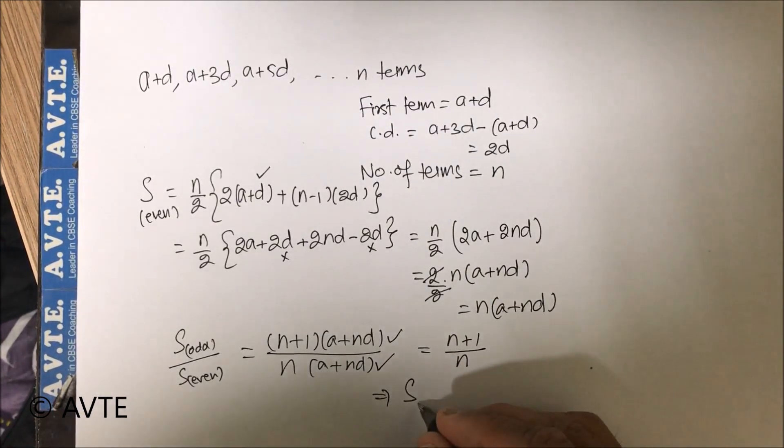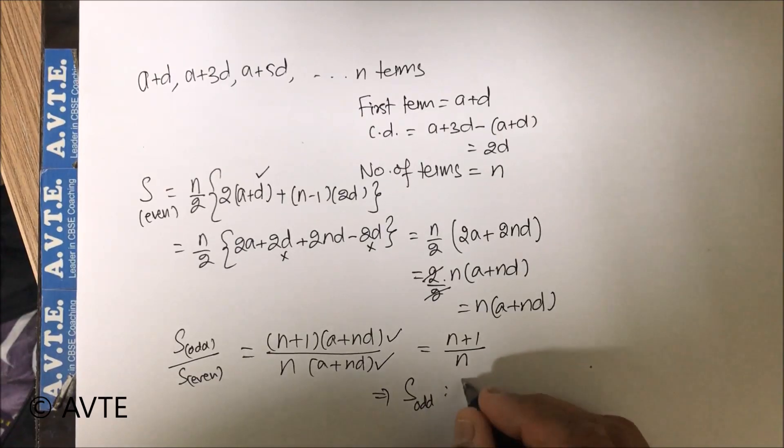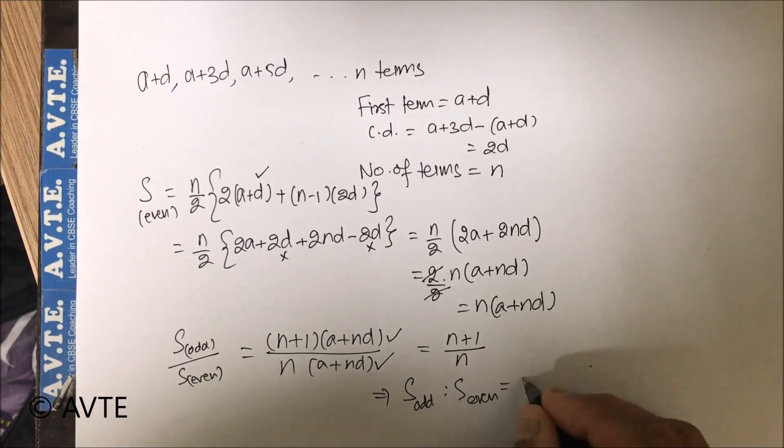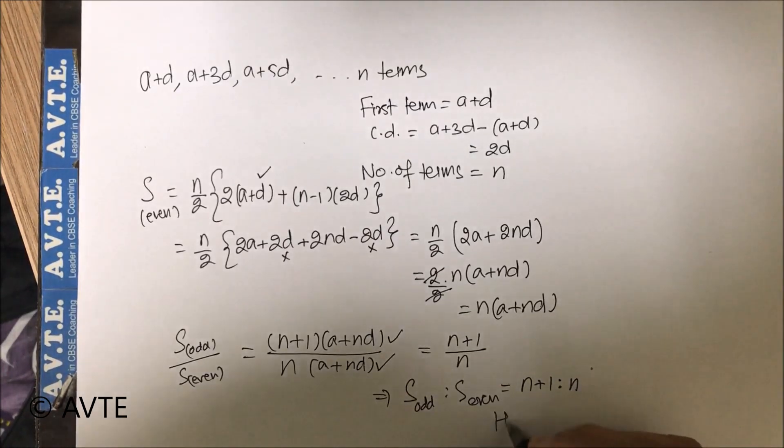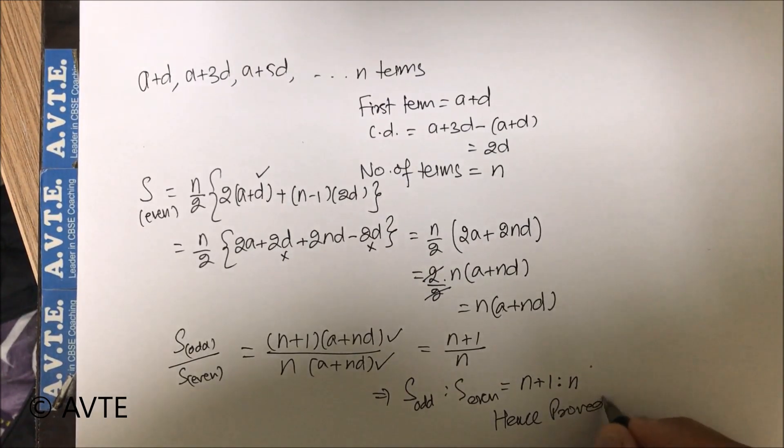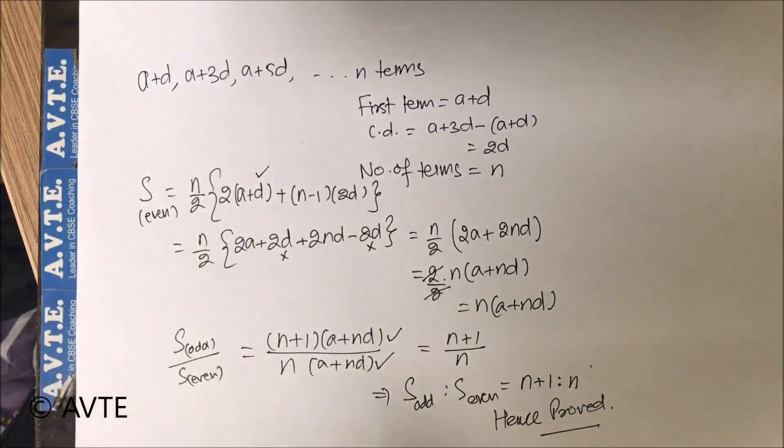So this implies sum of odd terms is to sum of even terms is in the ratio n plus 1 is to n, hence proved. Quite easily done. Thank you very much.